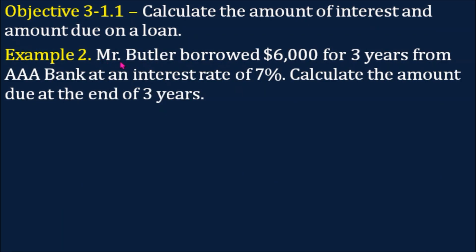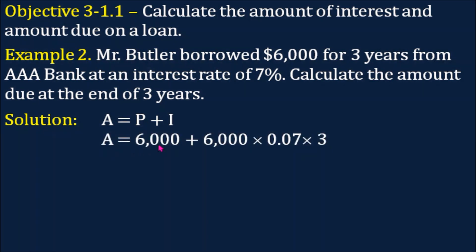Example number 2. Mr. Butler borrowed $6,000 for 3 years from AAA Bank at an interest rate of 7%. Calculate the amount due at the end of 3 years. Amount due equals the principal — the money borrowed — plus I, or the interest, using the formula P times R times T.